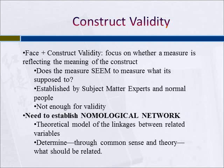Face and content validity focus on whether a measure reflects the meaning of the construct—does it seem to measure what it's supposed to? We rely on qualitative data from subject matter experts and ordinary people. But face and content validity alone are not enough to establish construct validity. Rather, we need to establish what we call a nomological network—a theoretical model of linkages between related variables. We use theory and common sense to determine what types of variables should and should not be related to our measure.